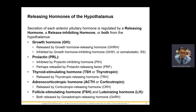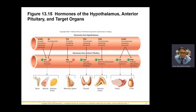Prolactin — inhibited by prolactin inhibiting hormone. When a baby comes, prolactin from the anterior pituitary will stimulate the mammary gland for milk production.